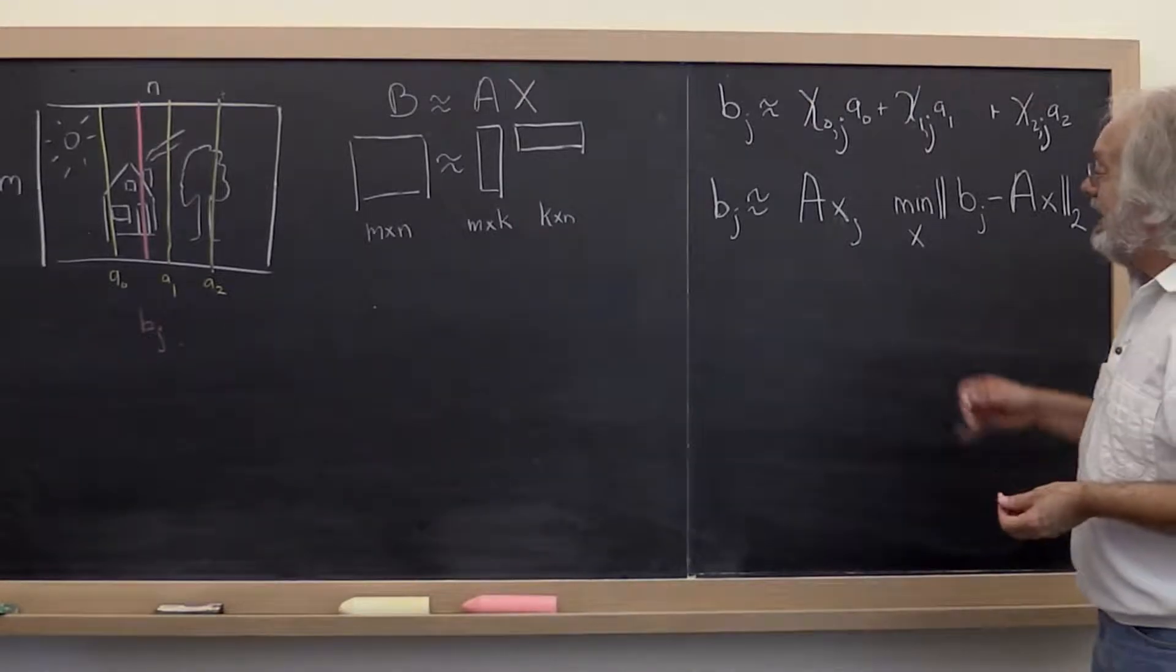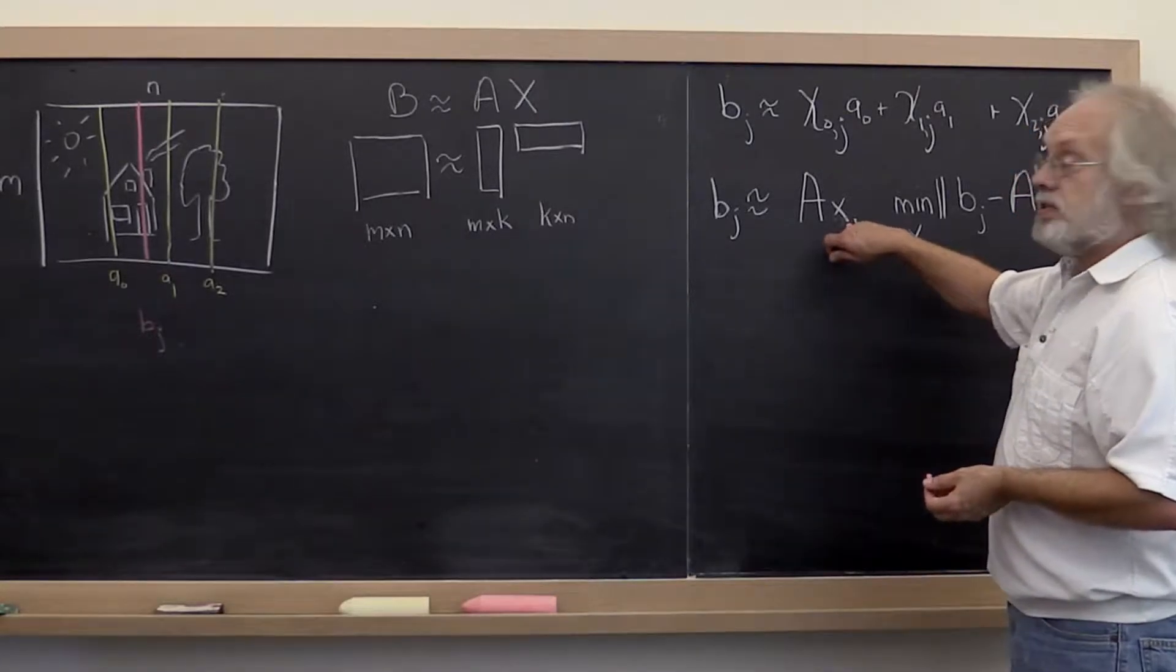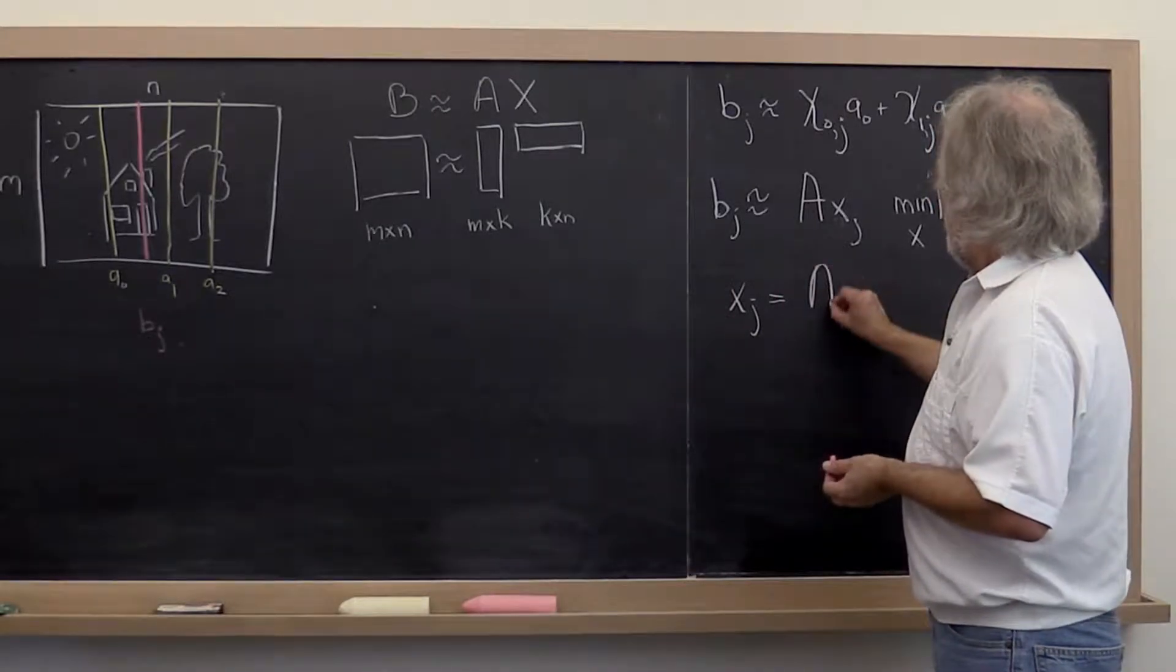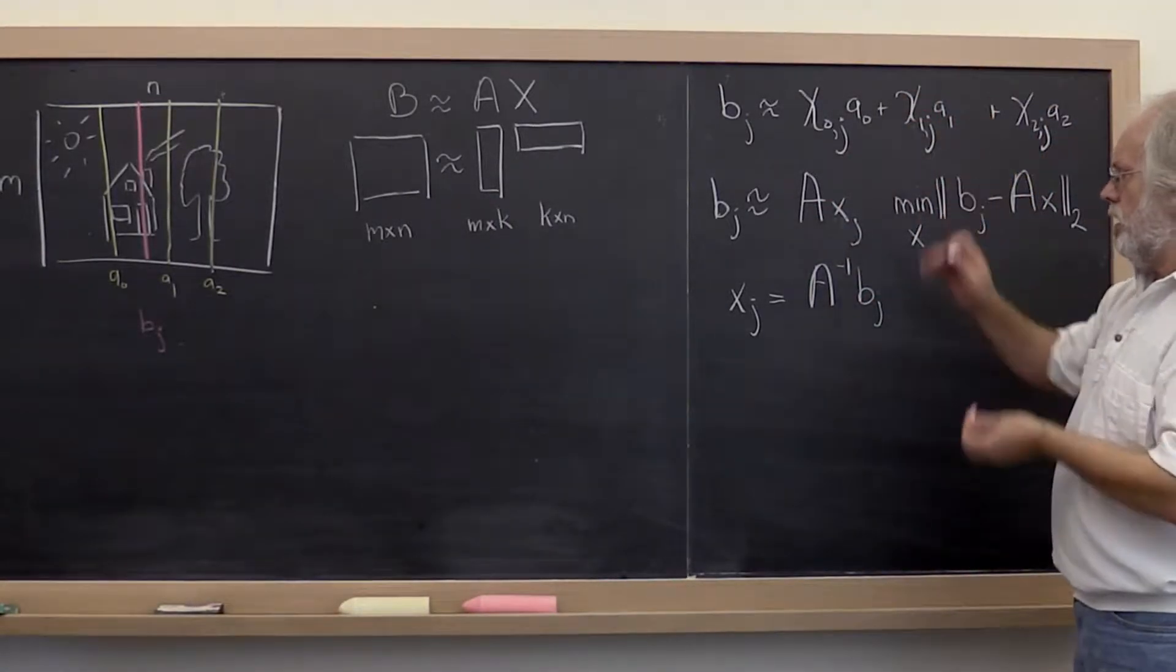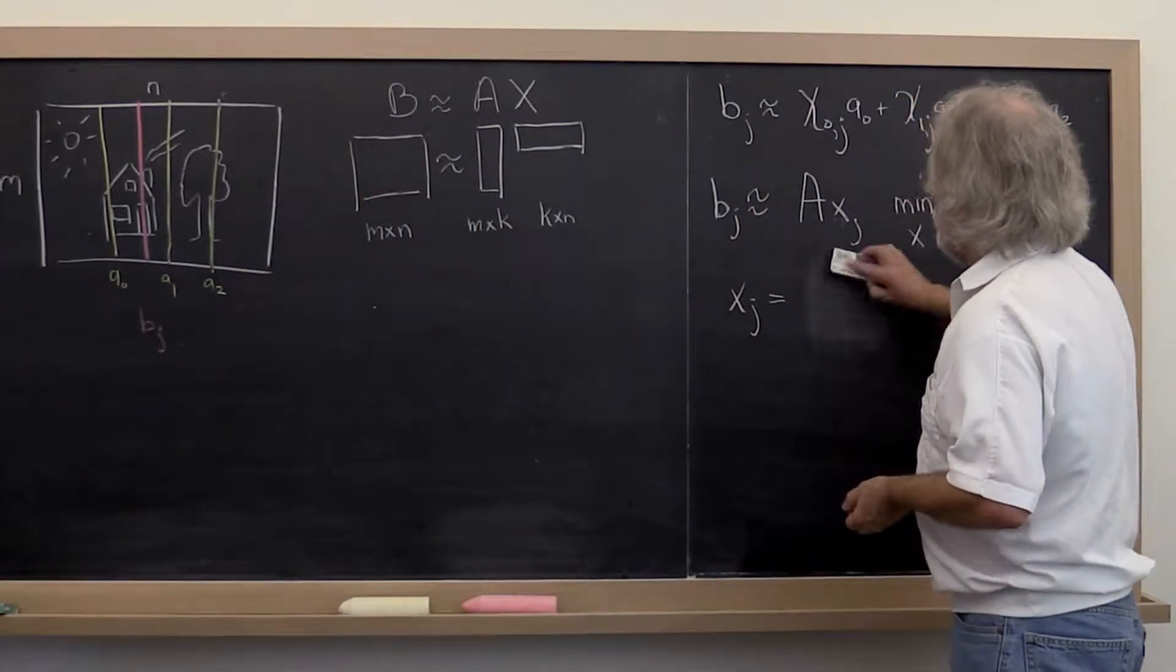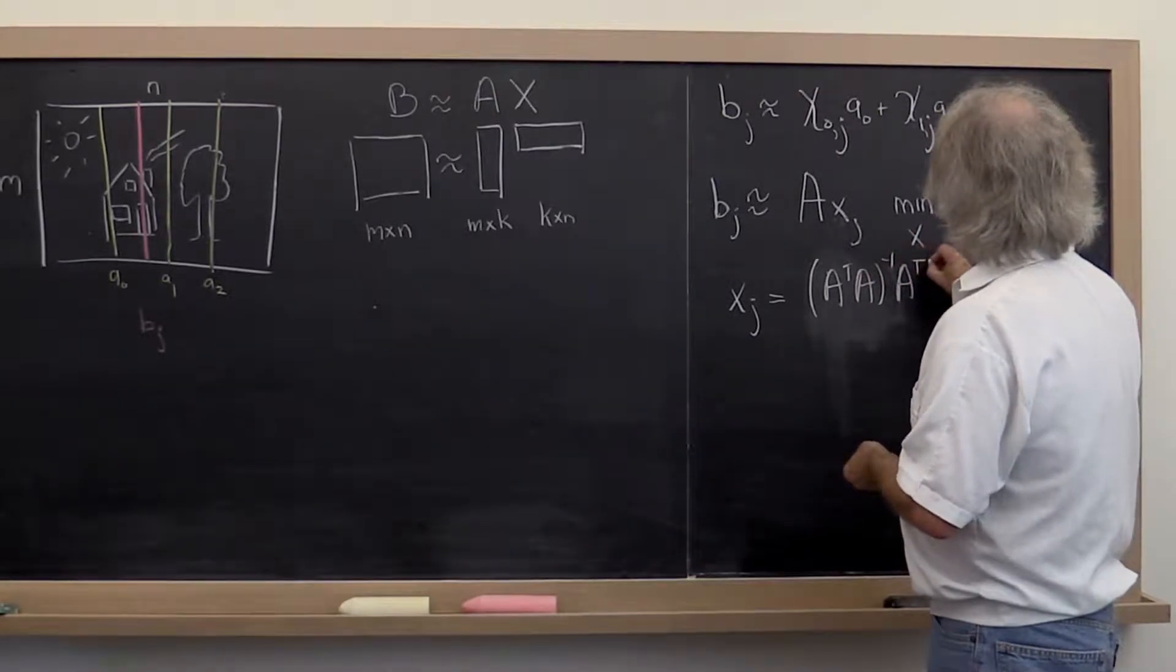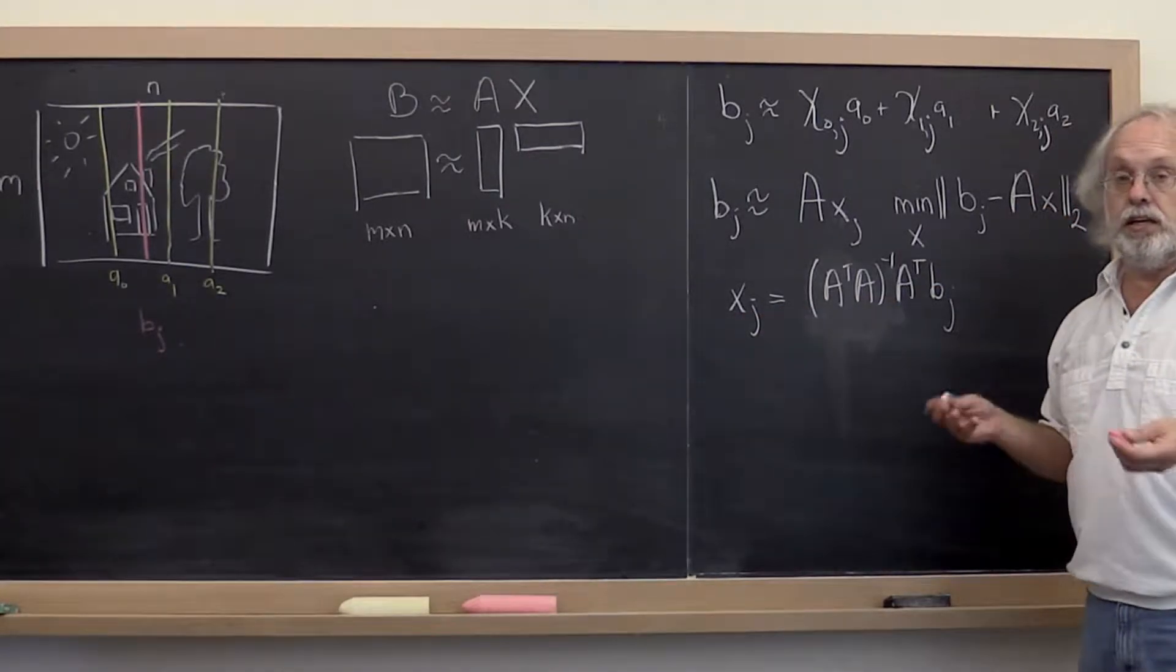Now if A has linearly independent columns, then the best such solution is given by, well let's see, if A were square and invertible, then Xj would simply be A inverse times Bj. But A has more rows than columns in this case, so we can't do that. Now there's something called the pseudo inverse that takes its place. And the pseudo inverse is given by A transpose A inverse A transpose times Bj. And you can prove that this is the best choice in the case where A has linearly independent columns.